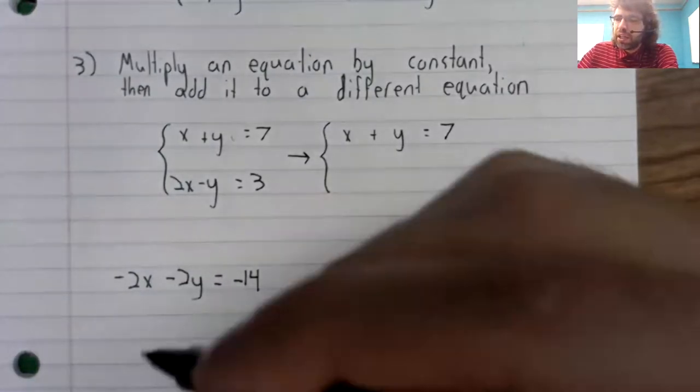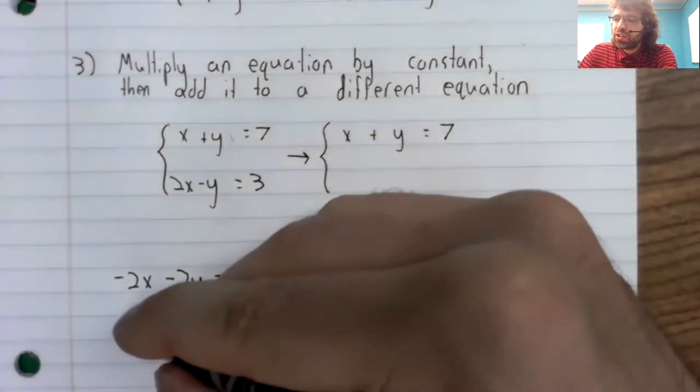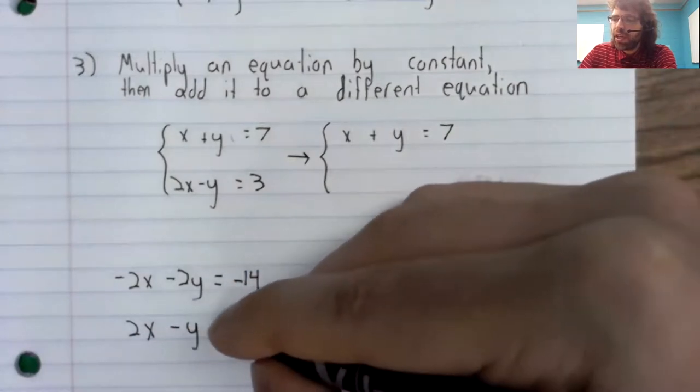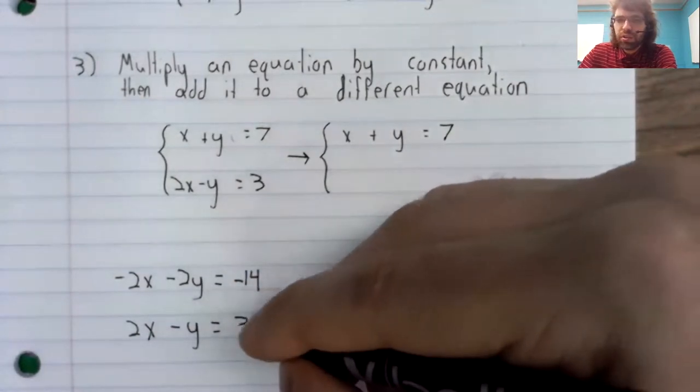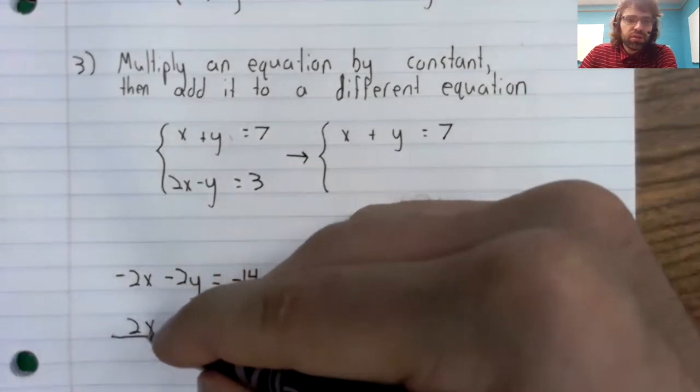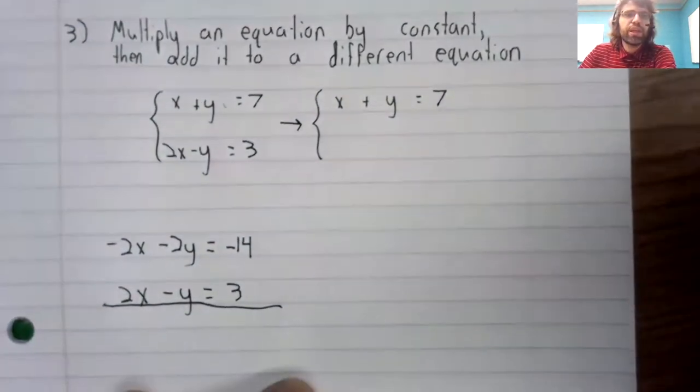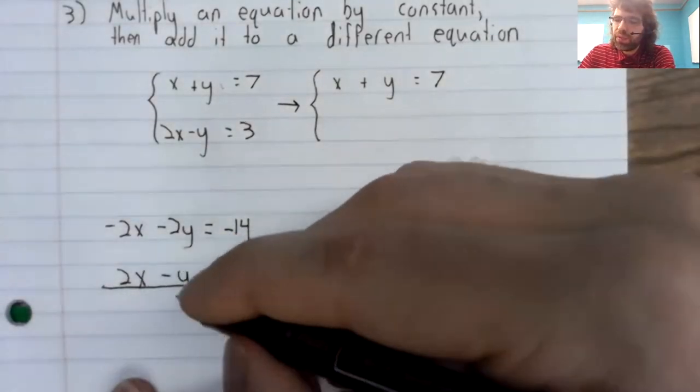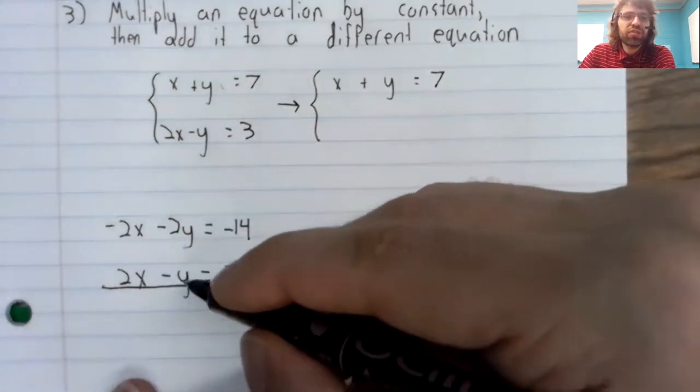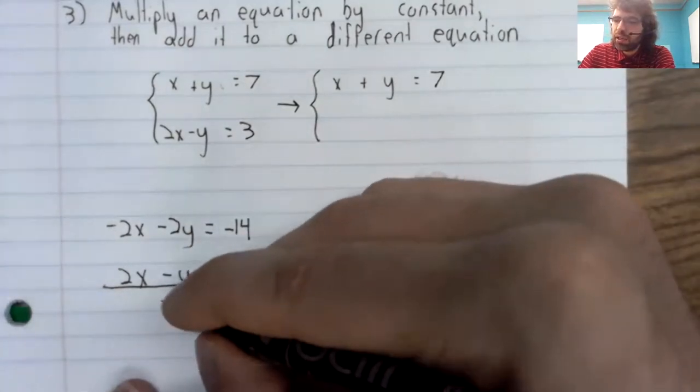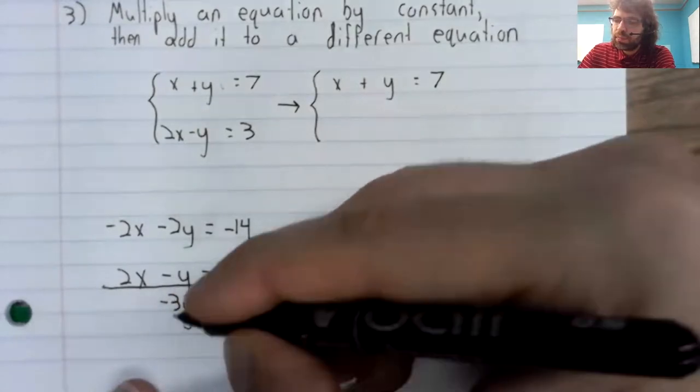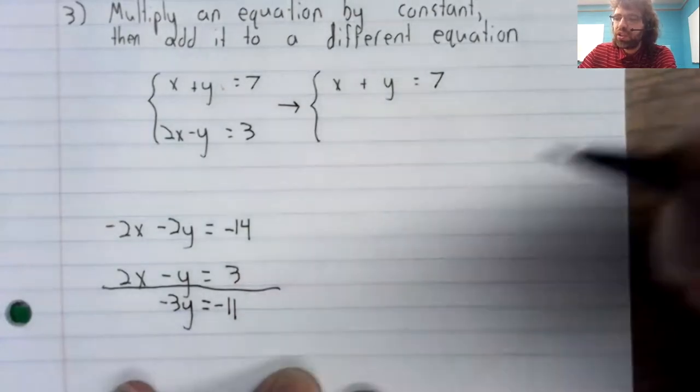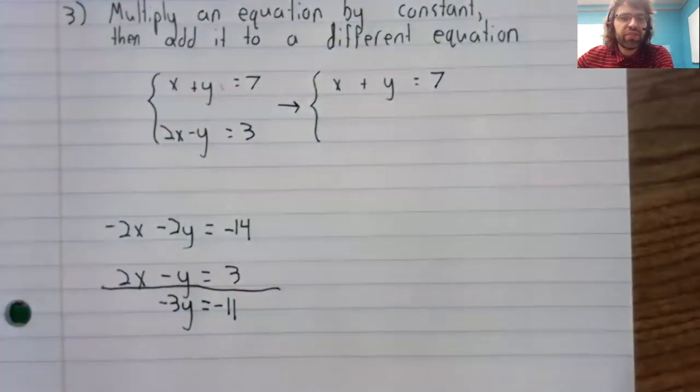And now we're going to take this and add it to the second equation. Our x's go away and negative 2y plus negative y, negative 3y equals negative 11.